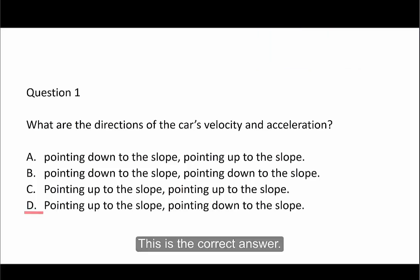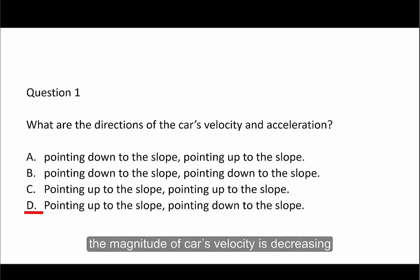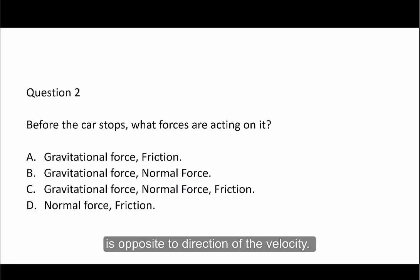This is the correct answer. The direction of the car's velocity is pointing up the slope. Since the problem states that the car finally stops, the magnitude of the car's velocity is decreasing, which means that the direction of the acceleration is opposite to the direction of the velocity.